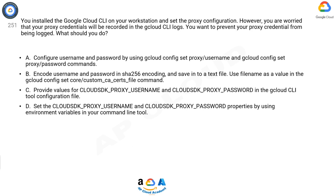Use the file name as a value in the cloud config set core/custom_ca_certs_file command. Option C: Provide values for CLOUDSDK_PROXY_USERNAME and CLOUDSDK_PROXY_PASSWORD in the Cloud CLI tool configuration file. Option D: Set the CLOUDSDK_PROXY_USERNAME and CLOUDSDK_PROXY_PASSWORD properties by using environment variables in your command line tool.